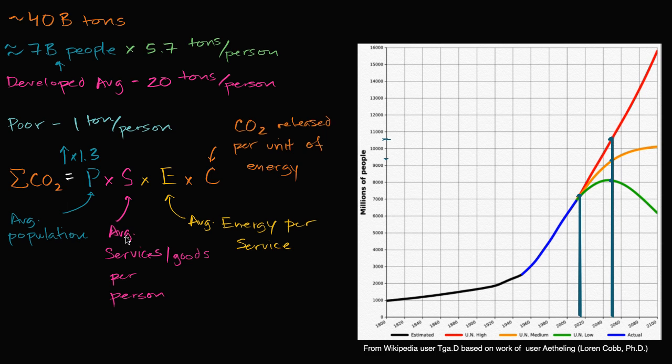Now, average goods and services, or average services per person. Well, we want the poor to be able to consume more. Now, maybe some of us in the developed world, maybe we consume a little bit too much. That's a philosophical thing for folks to debate. But on average, we want the world to, we want more people to have better transportation, better access to healthcare, better access to education, better access to leisure. And so this is likely to go up. In fact, this will go up as the world goes richer. And some of the predictions, I believe, what Bill cited in his TED Talk, was that this could go up by a factor of two. This could go up by a factor of two. And this is good. We want the world to become richer. We want more people to consume goods and services.